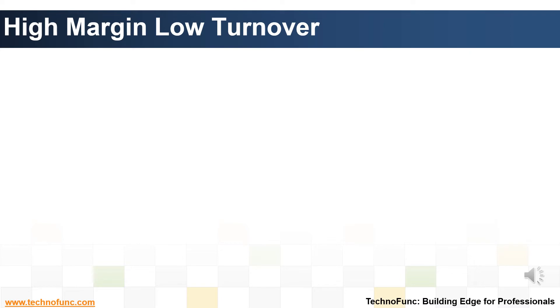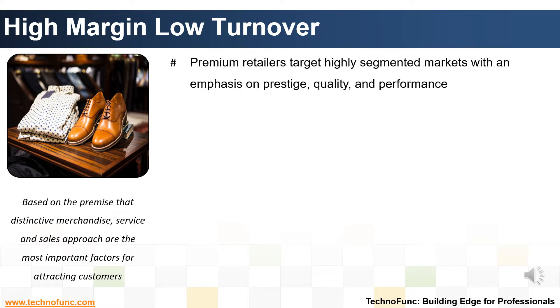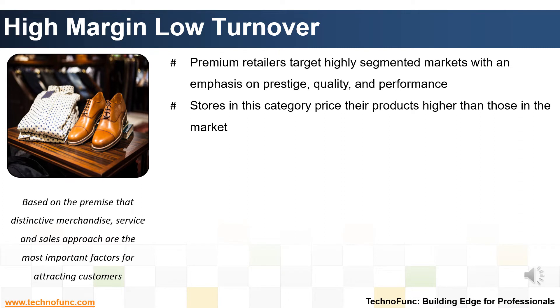The second model is based on the premise that distinctive merchandise, service, and sales approach are the most important factors for attracting customers. Premium retailers target highly segmented markets, with an emphasis on prestige, quality, and performance much more than price.